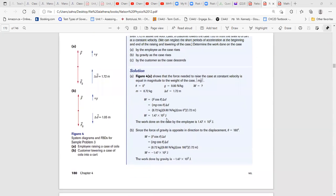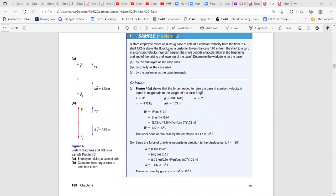Let's just look at the next question. A store employee rises 8.72 kg case 1.72 m above the floor. Later, the customer lowered the case 1.05, and then find the work done on the case. So, when the employee has the case rising. So here, when you raise the case, you apply the force upward, the angle between displacement and force will be zero.